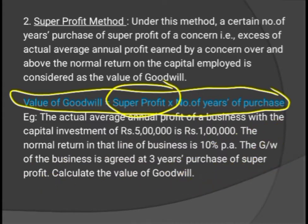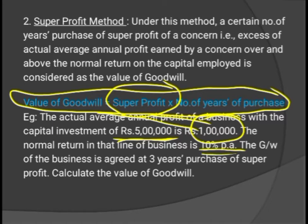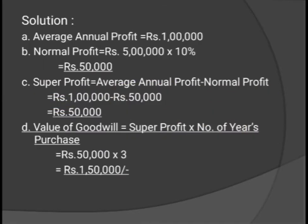Let's understand this with a simple example. The actual average annual profit of a business with a capital investment of Rs 5 lakh is Rs 1 lakh. The normal return in that line of business is 10% per annum. The goodwill is agreed at 3 years' purchase of super profit. We need to calculate the value of goodwill — that is, 3 times the super profit.